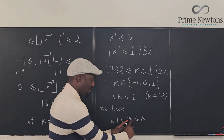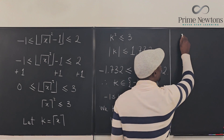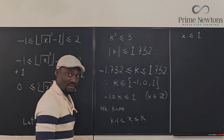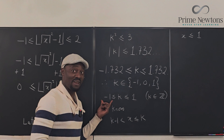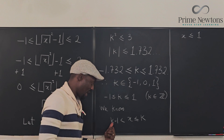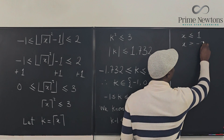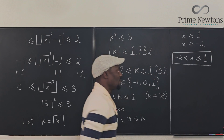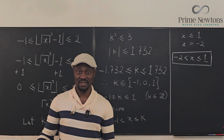Using this relationship: since x is less than or equal to k, and the largest k is one, x must be less than or equal to one. For the lower bound, since x is strictly greater than k minus one, and the smallest k is minus one, x is strictly greater than minus one minus one, which is minus two. So the solution is minus two is strictly less than x, and x is less than or equal to one. That is the solution to this quadratic ceiling-floor inequality.